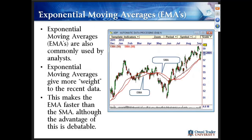Another commonly used moving average would be the exponential moving average, or EMA. This gives more weight to the recent data, making it a faster indicator than the SMA. There are advantages and disadvantages to that, and you can see on the chart that at times the difference can be pretty substantial with your analysis; at other times it can be very similar. It really depends on what's going on in the market at that time.